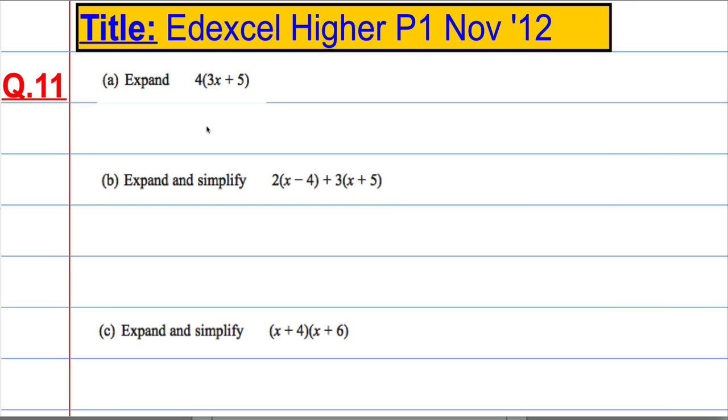Okay, so we want to expand here. You're going to take the number outside the bracket and multiply by everything inside the bracket. 4 times 3x is 12x, and 4 times 5 is 20.